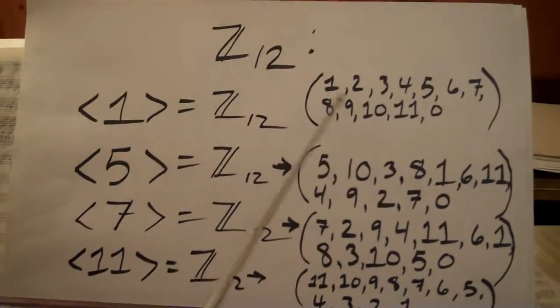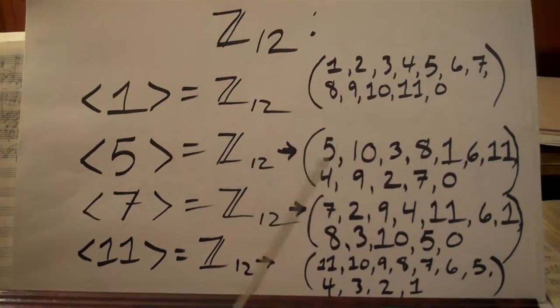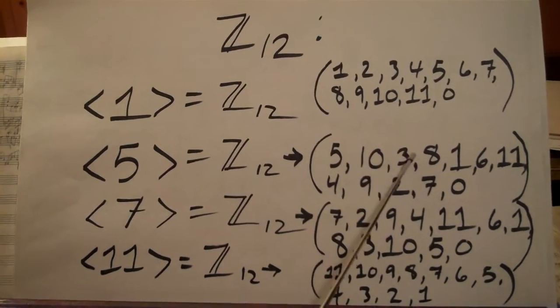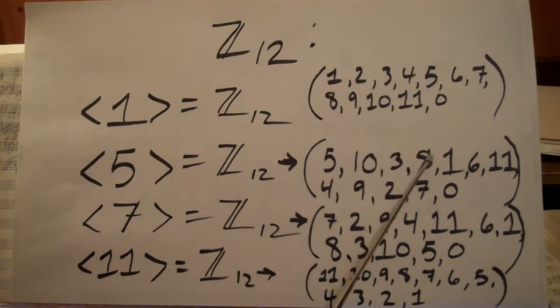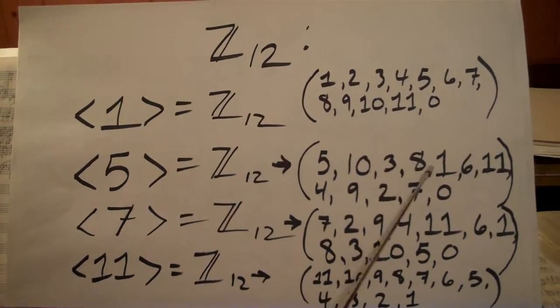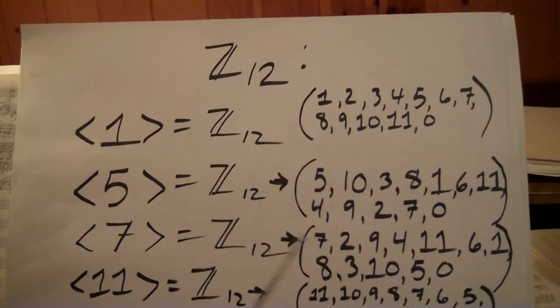1 generates the following sequence. 5, we have 5, 10, 10 plus 5 is 3 mod 12, plus 3 is 8, or plus 5 is 8 and so on.